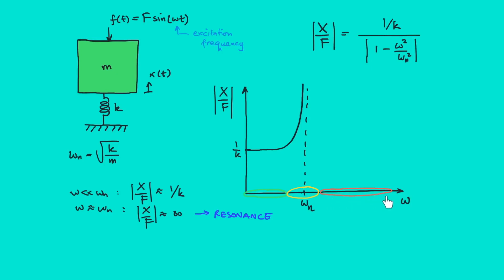For the third region when ω is much larger than ωₙ, this term here will be much much larger than 1. Let's say ω is 1 million and ωₙ is 1. So we have 1 minus 1 million so we can ignore 1.